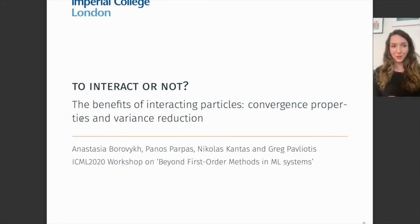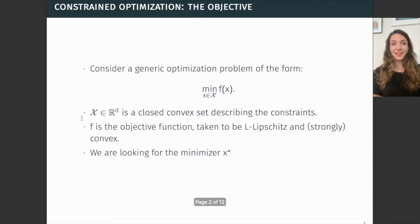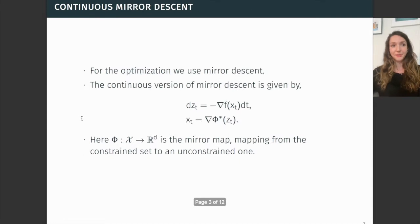Hello world and welcome to the video presentation for the paper 'To Interact or Not: The Benefits of Interacting Particles.' In this paper, our objective is to minimize some function f of x, with x lying in a constraint set curly X. The way we do this is using an algorithm called mirror descent.